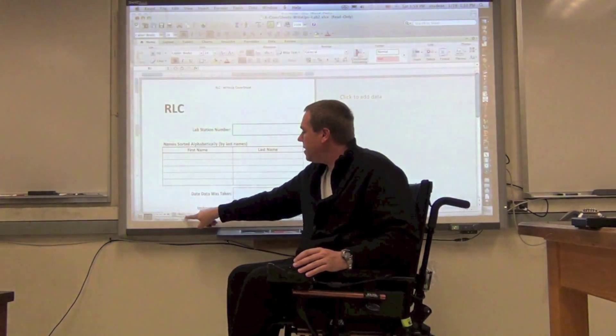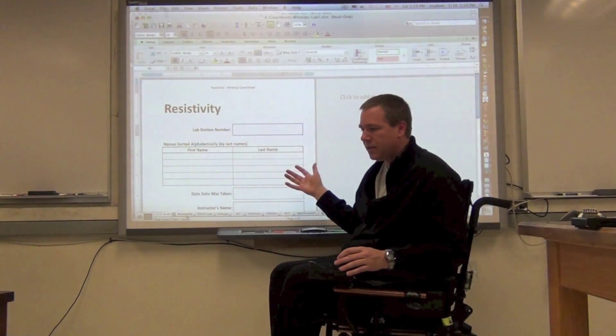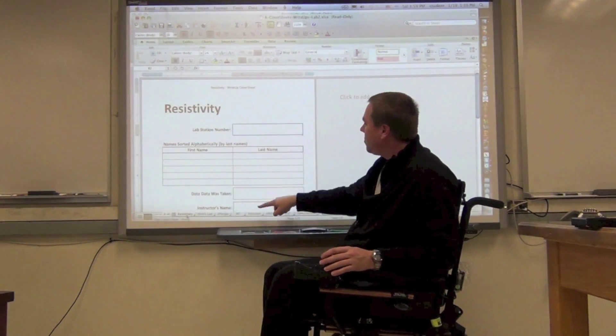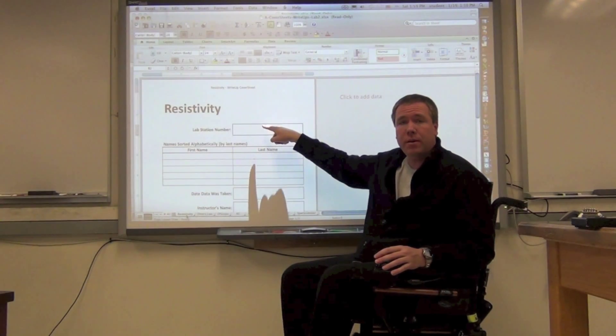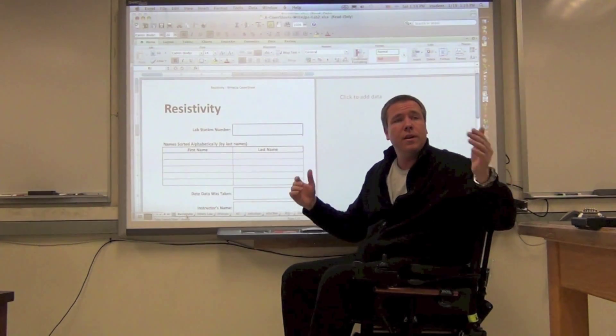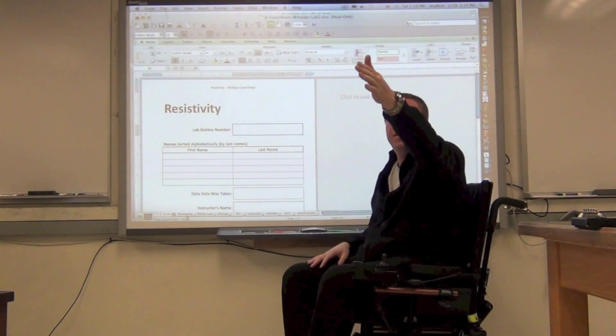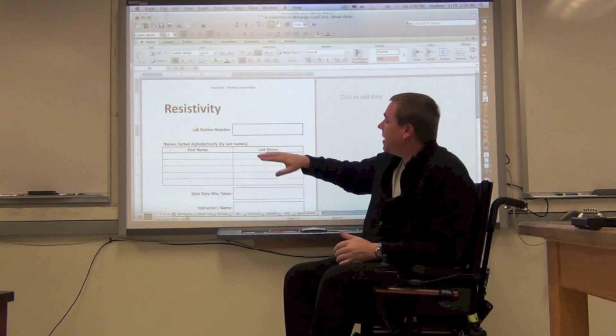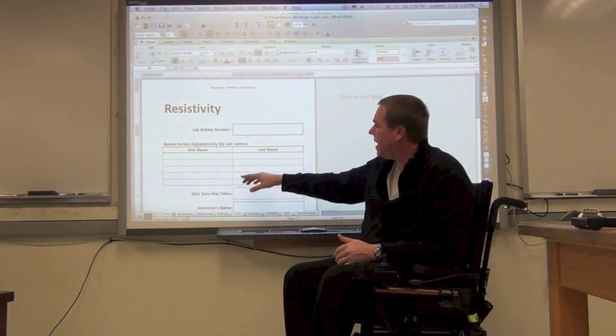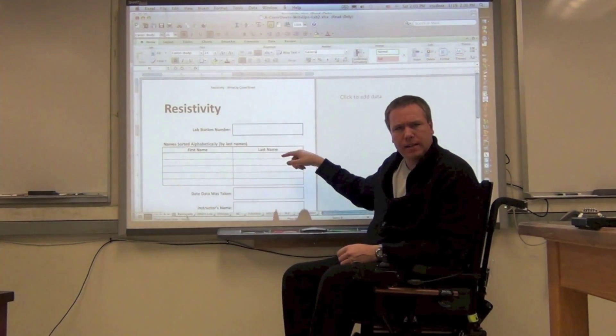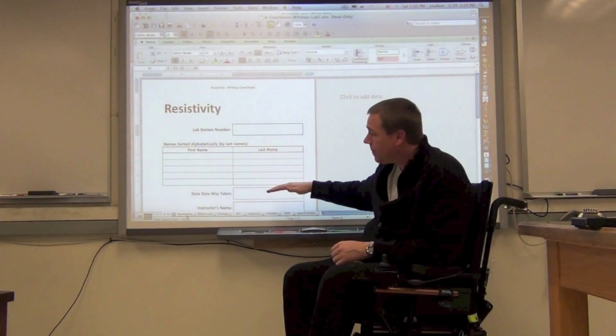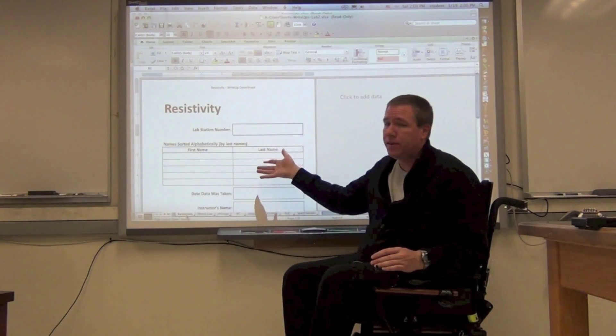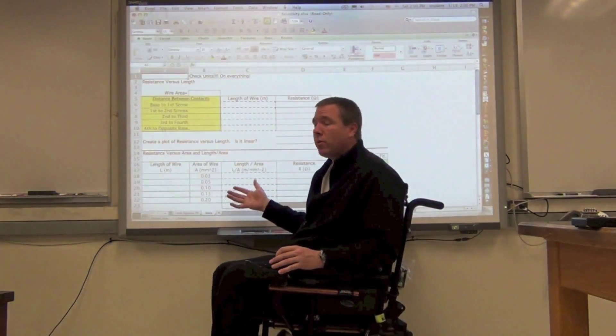The idea is that you can save this file into a space on Dropbox, somewhere where you have access to it, and get everybody's names. And the instructor name and the lab station number, which by the way is written on each computer in this room. We go from 11, 12, 13, and we go around the room to 18 over here. That lab station is important, so you want to write down the lab station number and everybody's name, and it should be sorted alphabetically by last name. It's important to write down the date that you took the data and your instructor's name, and then you can just print this cover sheet. So this is the template created for you.